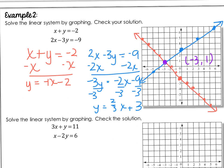Now I can check my answer. I prefer going back to the original equation — if you made an error converting to slope-intercept form, you won't catch it otherwise. X plus Y: negative 3 plus 1 equals negative 2 — a true statement. And then 2 times X, which is negative 3, minus 3 times Y, which is 1, equals negative 9. So negative 6 minus 3 is negative 9 — that checks.